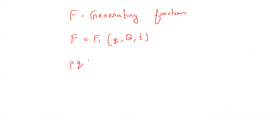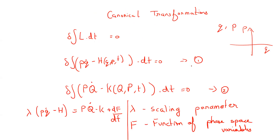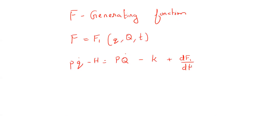Plugging F1 into our equation, we have PQ̇ minus H equals capital P, capital Q̇ minus K plus dF1/dt. Since F1 is a function of q, Q, and t, the total time derivative using the chain rule of calculus will expand into partial derivatives with respect to q times q̇, plus partial derivatives with respect to Q times Q̇, plus the partial derivative with respect to t.